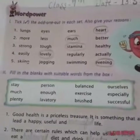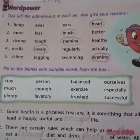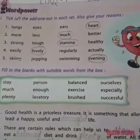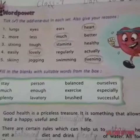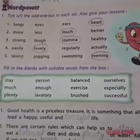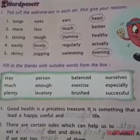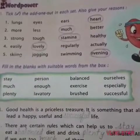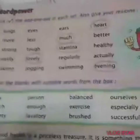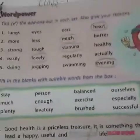The first exercise is: tick the odd one out in each set and also give your reason. In each set, four options are given and we have to choose the odd one. You can see here: lungs, eyes, ears, heart.